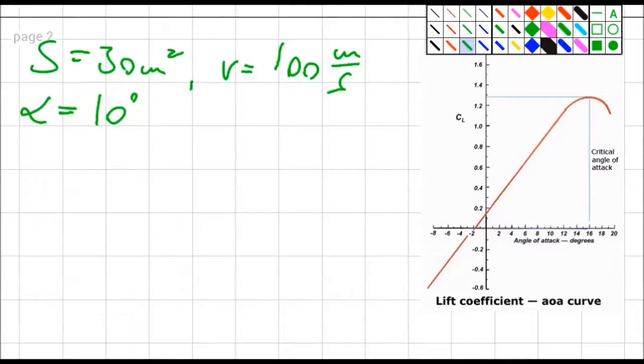So from here I go into my diagram and let's say C_L over angle of attack. I can find out my C_L. I start here with 10 degrees, go up there, go from here over here. I find out that my C_L equals 1. There is no dimension. This is a plain coefficient.